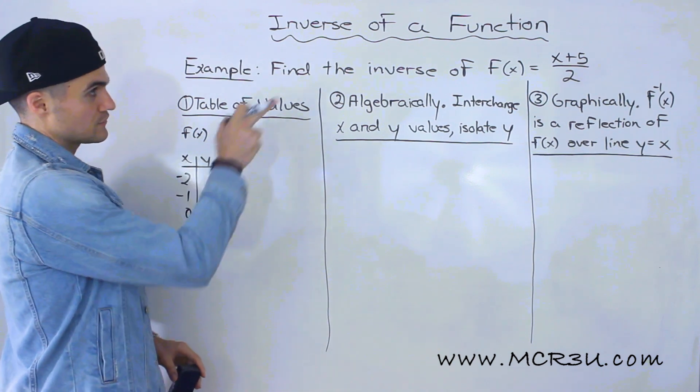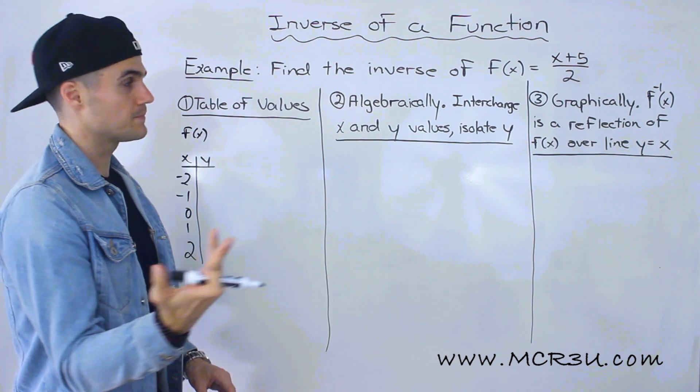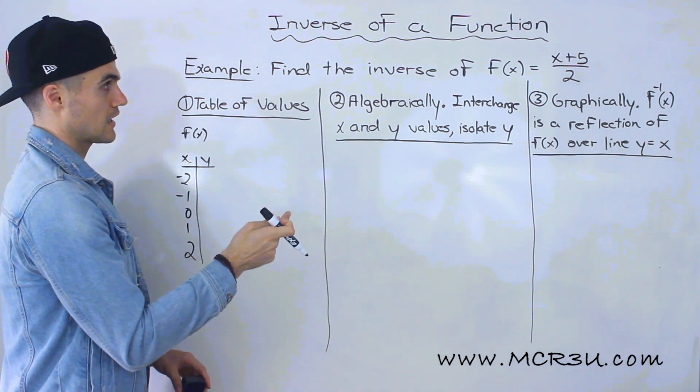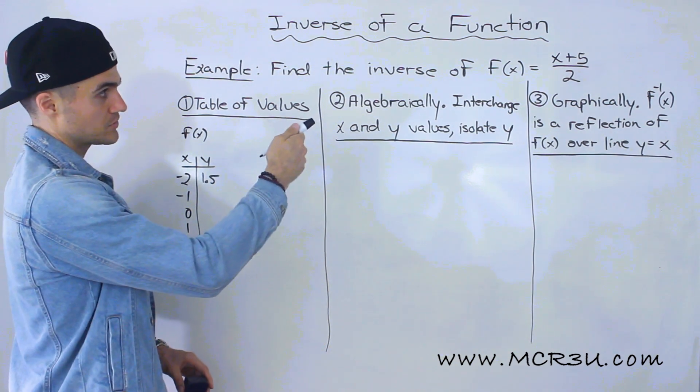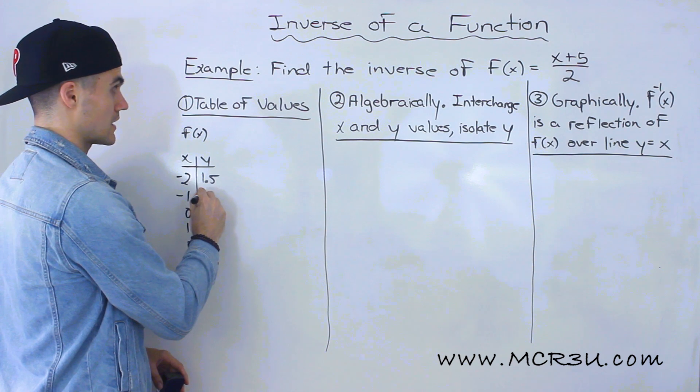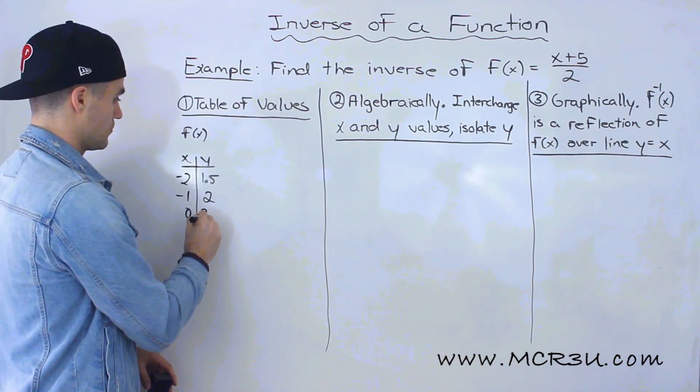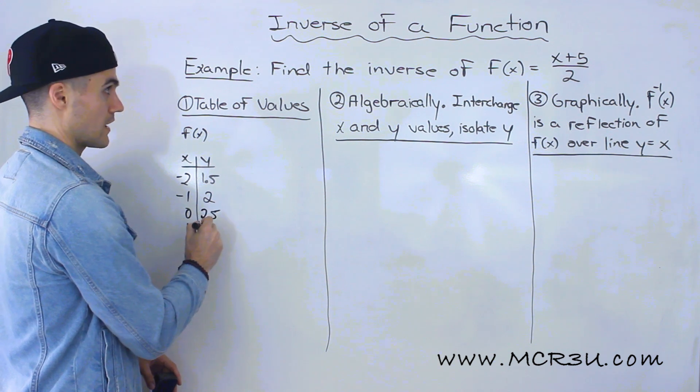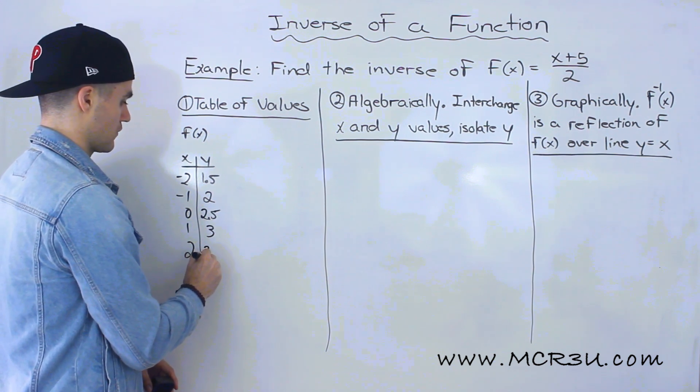So if we plug in negative 2, we'll have negative 2 plus 5, which is 3, and then 3 over 2 is 1.5. Negative 1 plus 5 is 4 over 2 gives us 2. And then 0 plus 5 over 2 gives us 2.5. And then we'll have 3 and then 3.5.